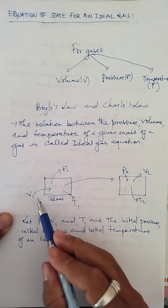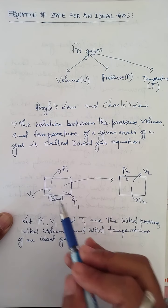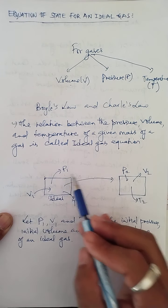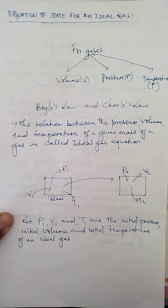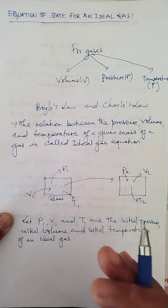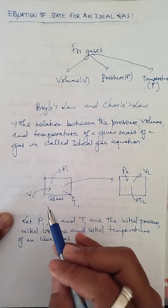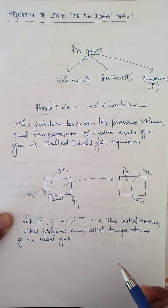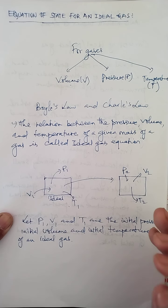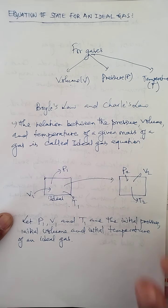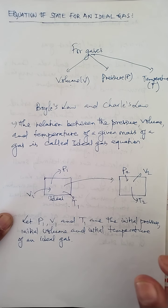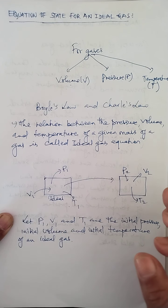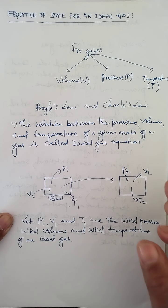That means all the parameters of this gas — volume, pressure, and temperature — change from V1 to V2, P1 to P2, and T1 to T2. We can divide this change from initial to final into two different parts by combining both laws. Boyle's Law gives the relation between pressure and volume when temperature remains constant, and Charles' Law gives the relation between volume and temperature when pressure remains constant.